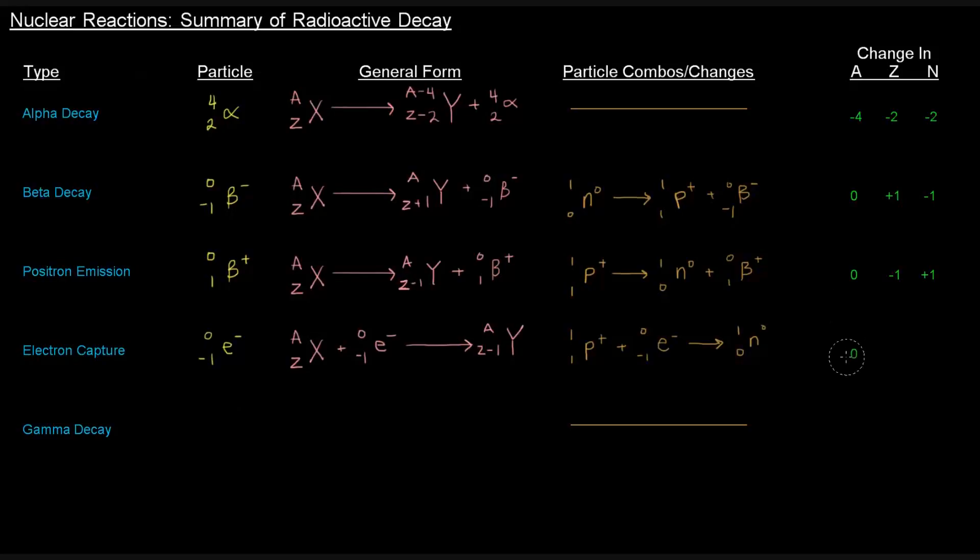The A value doesn't change, the Z number decreases by 1, and the N increases by 1. The effect of positron emission and electron capture on A, Z, and N are identical.